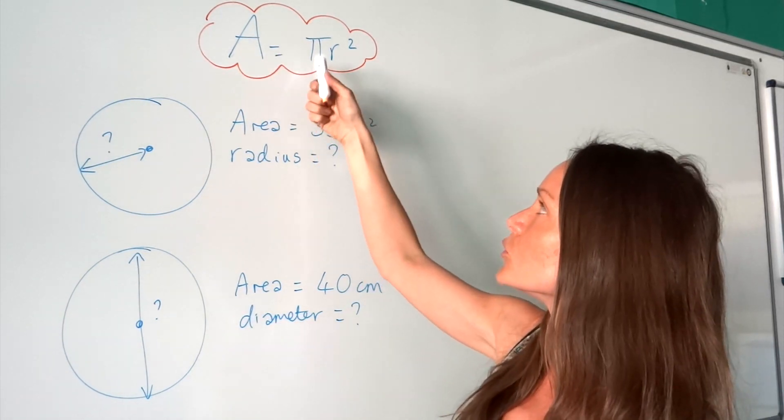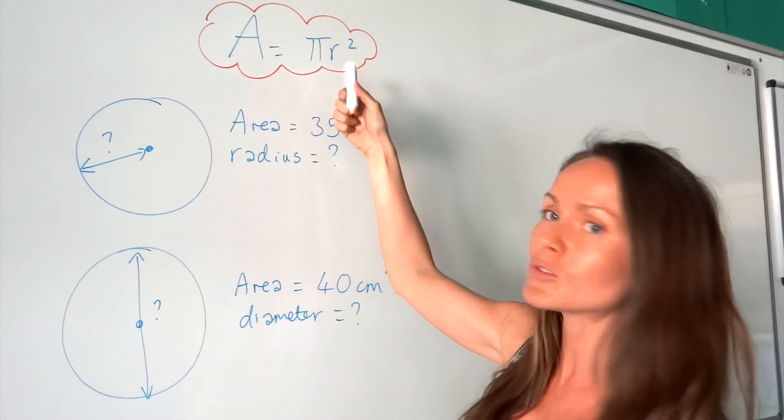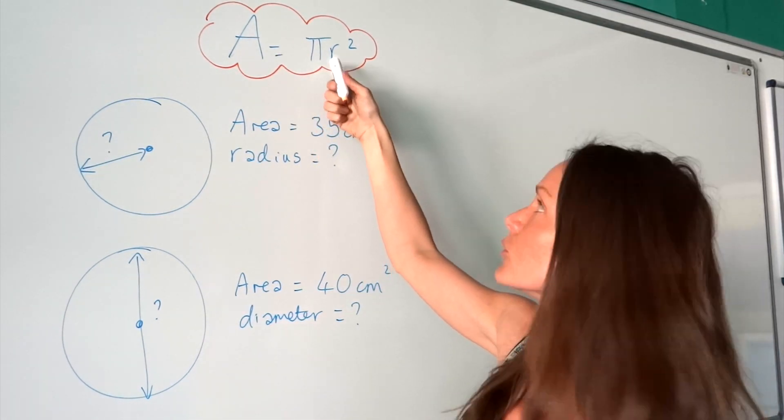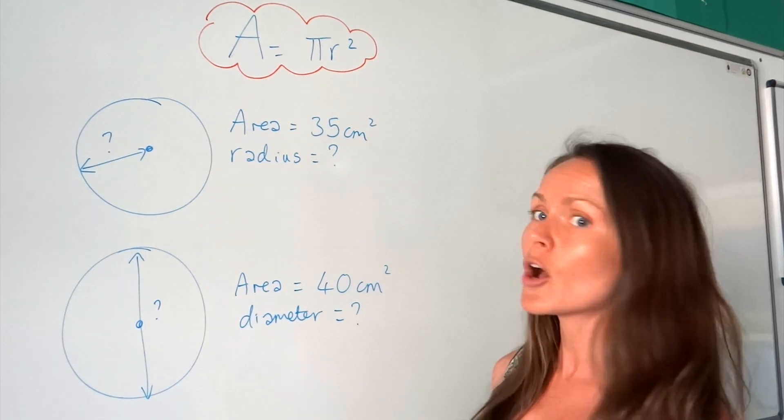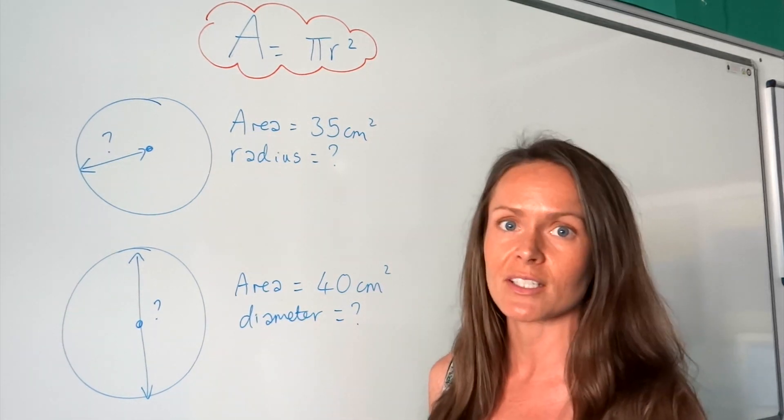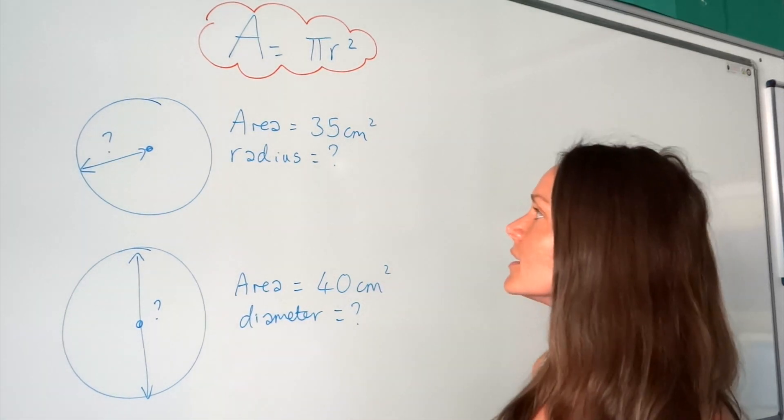Area is equal to pi multiplied by the radius squared. Hopefully, you already know how to do that.